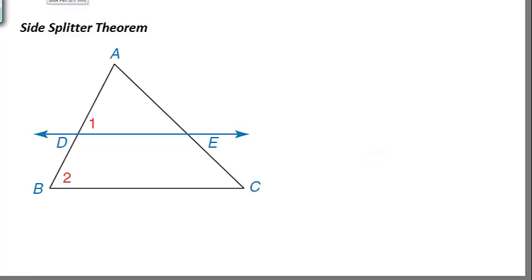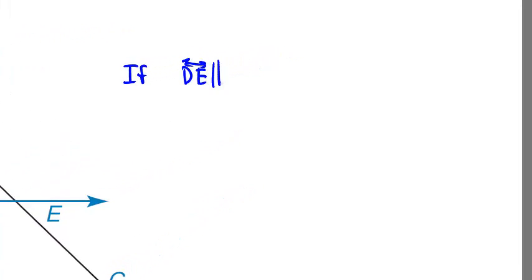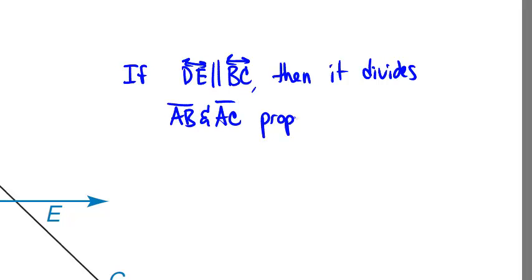Let's go ahead and take a look at the side splitter theorem that we talked about today in class. So what this basically says for the side splitter to work is that if we've got a triangle ABC and there's some line that comes through and splits two of the sides and that line happens to be parallel to the third side that it doesn't split. If DE is parallel to BC, then it divides AB and AC proportionately.